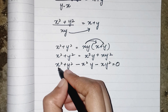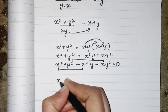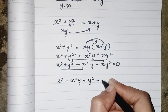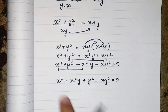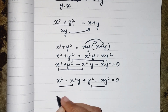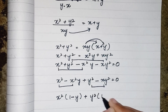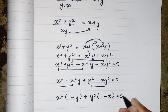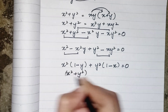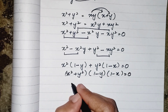We rearrange by grouping x square terms and y square terms together: x square minus x square y plus y square minus xy square equals zero. Taking x square common from the first two terms gives x square times (1 minus y), and taking y square common from the last two gives y square times (1 minus x). So we have x square(1 minus y) plus y square(1 minus x) equals zero.